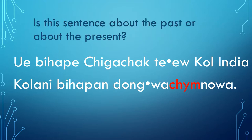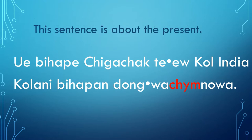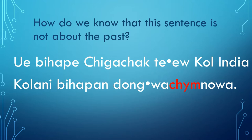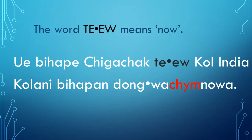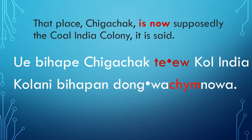Is this sentence telling us something about the past or the present? This sentence is about the present, the present time. How do we know that this sentence is not about the past? Well, the word Te'eu means now. This sentence is talking about something in the present. So the meaningful part Chm in the word Dungacham cannot be indicating past tense.